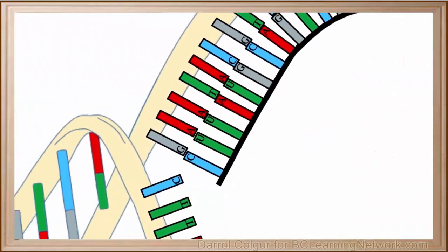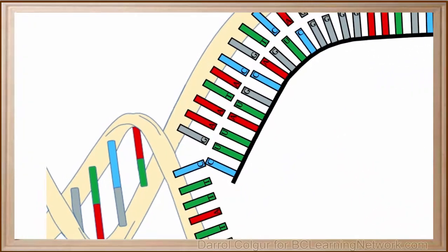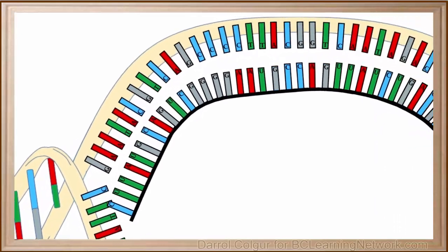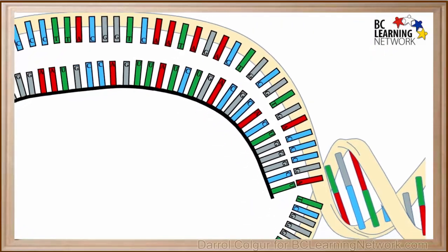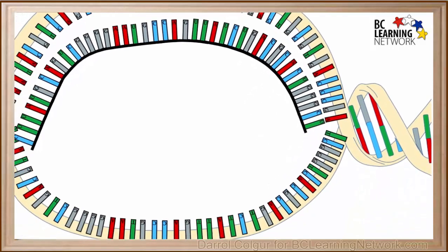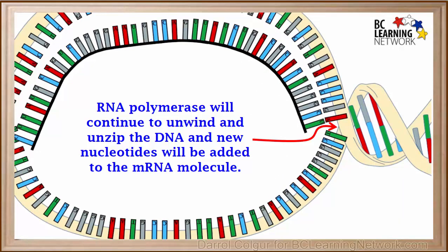We see that as the new mRNA molecule is formed, it separates from the template DNA strand. But it's not finished yet. RNA polymerase will continue to unwind and unzip the DNA, and new nucleotides will be added to the mRNA molecule. This will continue to happen until the terminator sequence is reached.